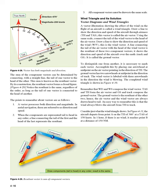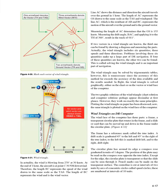In Figure 4-31, the aircraft departs from point A on a TH of 360° at a TAS of 150 knots. In one hour with no wind, it reaches point B at 150 nautical miles. In actuality, the wind is blowing from 270° at 30 knots. At the end of one hour, the aircraft is at point C — 30 nm downwind. BC represents the wind vector. Line AC shows the distance and direction the aircraft travels over the ground — the ground vector. Measuring AC determines the GS is 153 knots. Measuring the drift angle BAC and applying it to TH 360° gives a track of 011°.